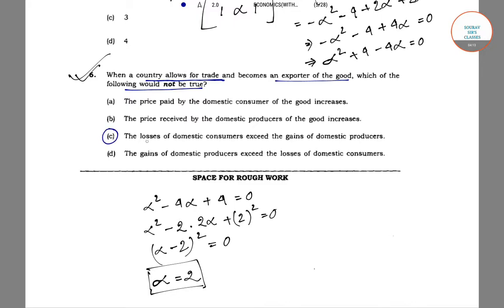So you can see option C says that the losses of domestic consumers exceed the gains of domestic producers. If it was the case, the country would have not participated in the trade process because its domestic consumers are facing losses and the losses that the consumers are facing is exceeding the gains of the domestic producers.